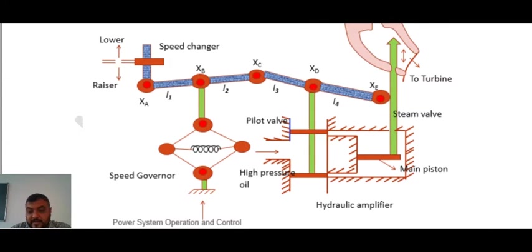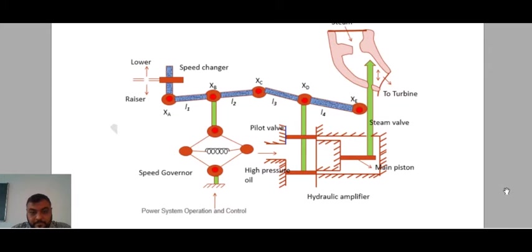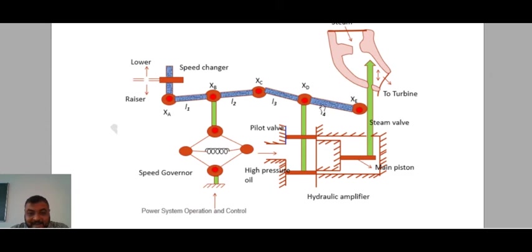To understand the Load Frequency Control problem, let us consider a single turbo-generator system supplying an isolated load. This is the fundamental of the Speed Governing System. You can see the figure of the Speed Governing System. We will start with the Speed Changer. You can see this is the Speed Changer. One link is connected here — this blue color is the link. You can see the parts L1, L2, L3, and L4. Connected with the link is a spring-like mechanism. These two are the Fly Balls, which are connected to this link, denoted as XB.